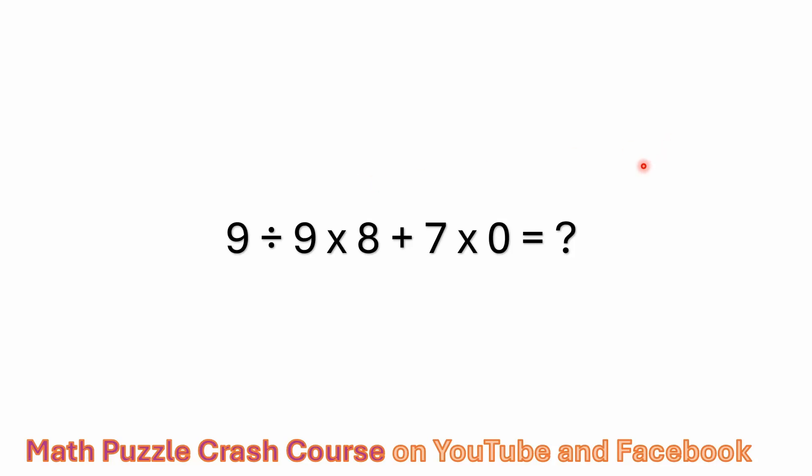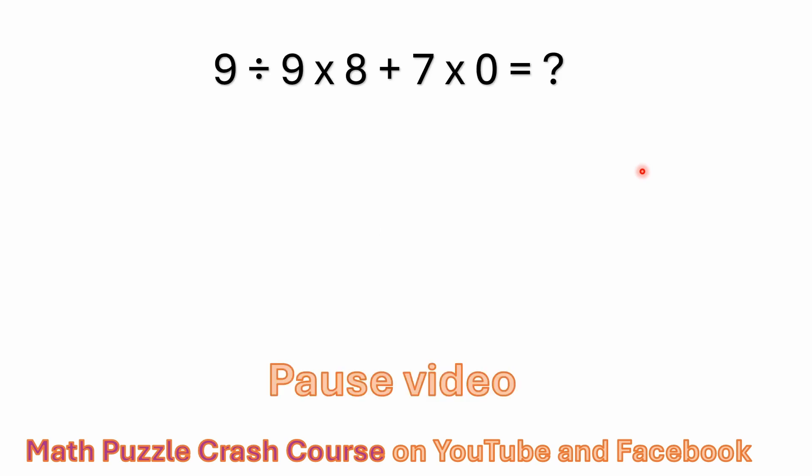Hello everyone and welcome back to the Math Puzzle Crash Course. I've got a little order of operations problem here that mixes multiplication, division, and some addition. And I've seen some really disturbing answers on this one. So I'd like to go through and work this out for anybody who might not be too sure on how this works. If you'd like to at this point, you can pause the video and we'll come back here in a few seconds and work it out together.